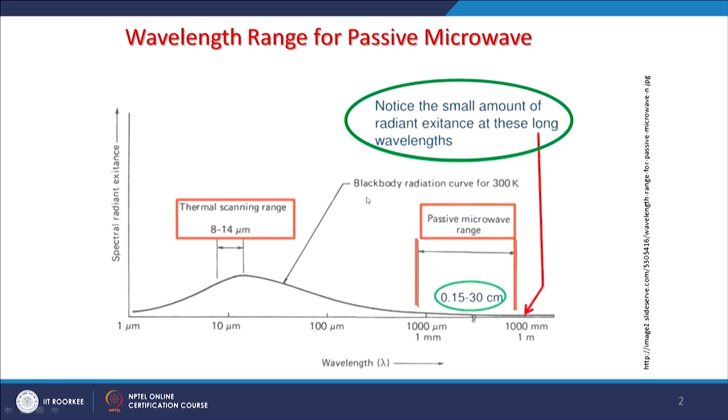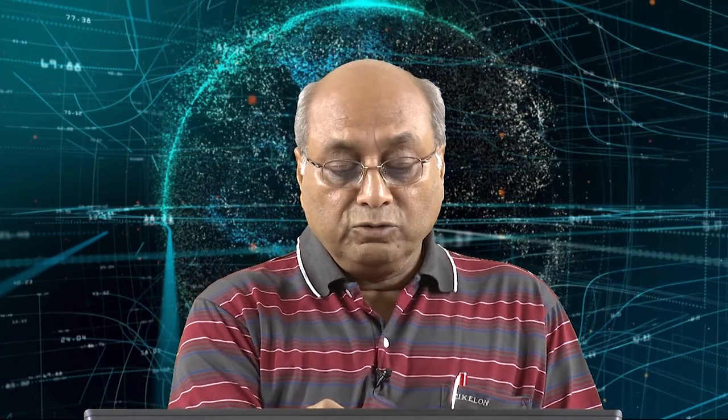The problem regarding spatial resolution arises because in order to register a signal into a sensor from around 850 kilometers away from the Earth, you require signals from a large area. Therefore, one must adopt very low resolution images, but this has been done in the past and we will see which satellites have done this. The microwave region in terms of frequency is 1 to 200 gigahertz, or in terms of wavelength 0.15 to 30 centimeter.